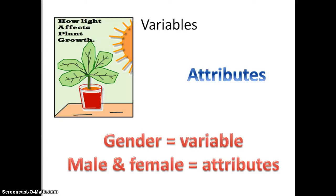Next we have variables. Now in any sort of science experiment, you always have variables. In your biology classes, you may have looked at light as a variable and how it affected the growth of a plant. Now in social science, our variables all have attributes. For example, if gender is your variable, then it has the attributes of being either male or female. In the studies that you look at, you will see all sorts of variables.